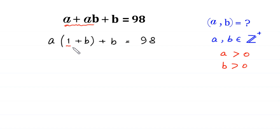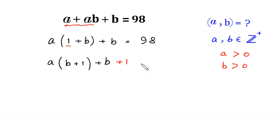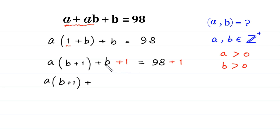Because we have 1 here, we add 1 to both sides of this equation. We can write (1 plus B) as (B plus 1), so we get A times (B plus 1) plus (B plus 1) equals 98 plus 1, which is 99.